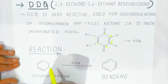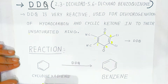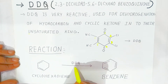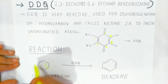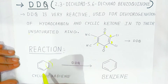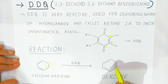When you see the reaction, cyclohexadiene is converted into benzene because of DDQ. There is dehydrogenation taking place — hydrogen is eliminated and it is converted into benzene, that is the double-bonded compound.